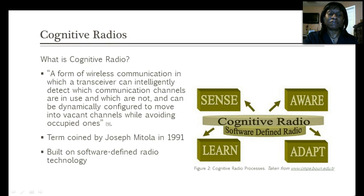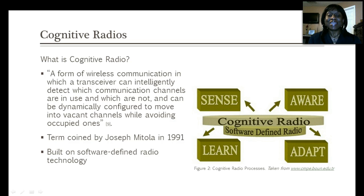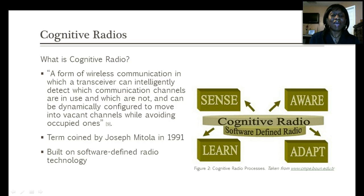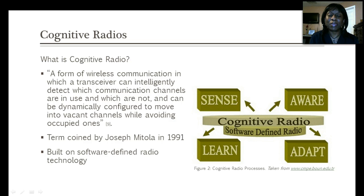So what exactly is cognitive radio? There have been varying definitions over time. One definition is that it is a form of wireless communication in which a transceiver can intelligently detect which communication channels are in use and which are not, and be dynamically configured to move into vacant channels while avoiding occupied ones. The term cognitive radio was coined by Joseph Mottola in 1991, and it is based on software defined radio technology.